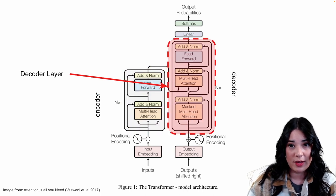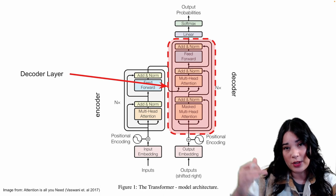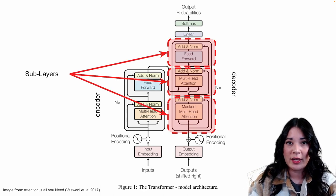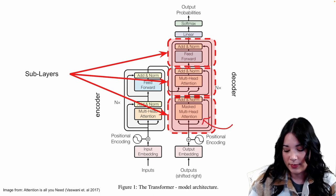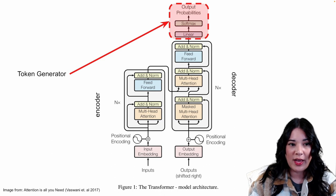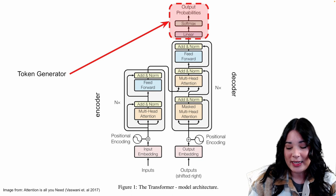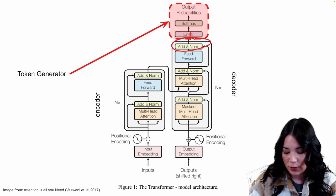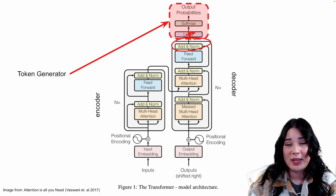The decoder layer has a lot of things that look very similar to the encoder, and again the job of a decoder is to take a hidden representation and produce a new sequence. Just like the encoder layer, the decoder layer has multiple sub-layers: first a masked multi-headed attention, then a regular multi-headed attention, and then like the encoder, a simple feed-forward layer. Last but not least, we have the token generator, which takes the output of the decoder layer, feeds it through a dense layer, and allows us to make predictions about which item should be next in a sequence.